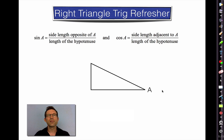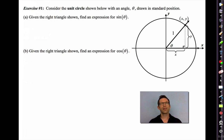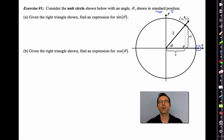Now let's use the unit circle to define sine and cosine. We've got the unit circle, centered at the origin with a radius of one, with an angle drawn in standard position — very important — the initial ray lying along the x-axis and the terminal ray somewhere else. Let's say that it intersects the circle at some generic coordinate point (x, y).